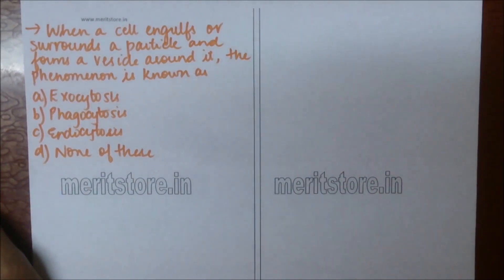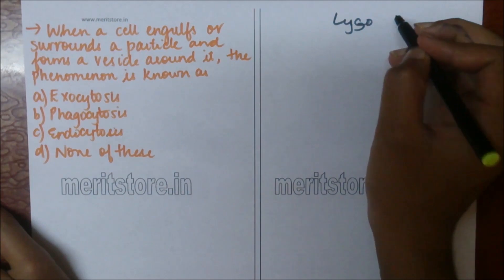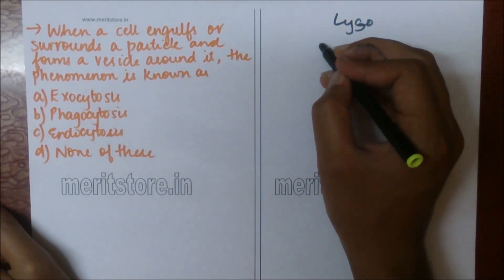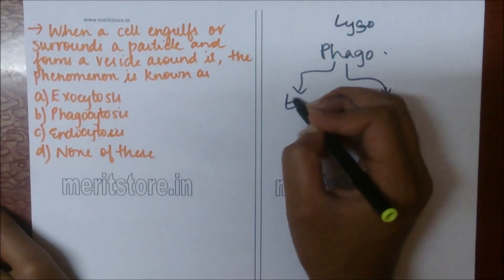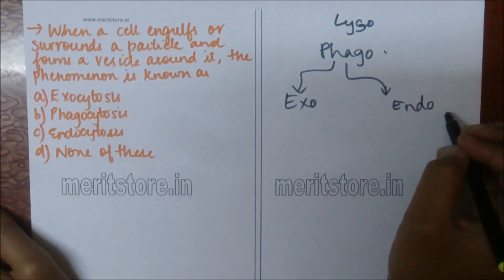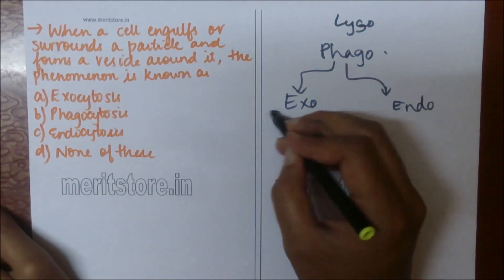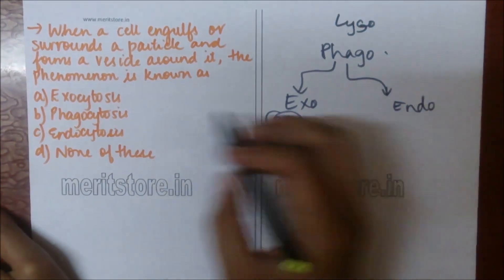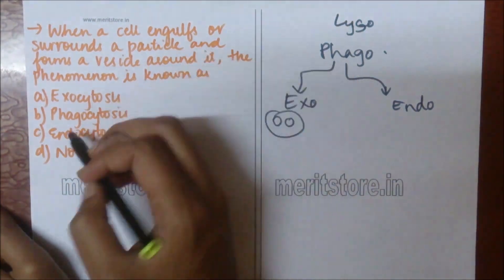When a cell engulfs or surrounds a particle and forms a vesicle around it, the phenomenon is known as: A) exocytosis, B) phagocytosis, C) endocytosis, D) none of these. Lysosomes, or suicidal bags, show phagocytosis — that is, cell eating. When they engulf a particle inside through a vesicle, it is known as endocytosis. When they form pinocytes, digest particles, and then release them, it is known as exocytosis. So option C is the correct answer.